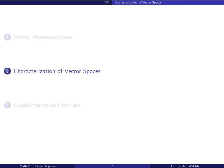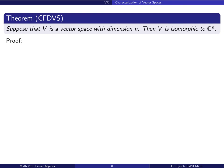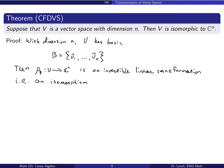Here is the characterization theorem: if V is a vector space of dimension n, then V is isomorphic to Cⁿ. The proof relies on the vector representation: since V has dimension n, it has a basis v₁, …, vₙ, and ρ_b with domain V and codomain Cⁿ is an invertible linear transformation — that is, an isomorphism. So V ≅ Cⁿ. The take-home message is that any finite-dimensional vector space is isomorphic to a vector space of column vectors, where n equals the dimension of V.